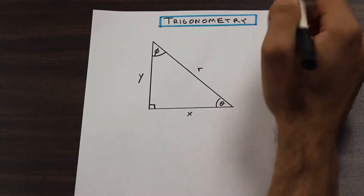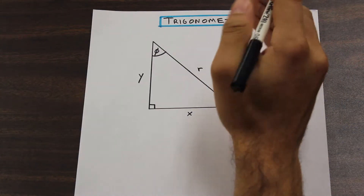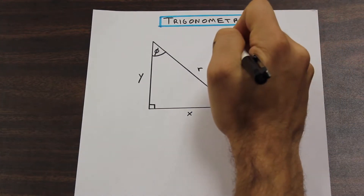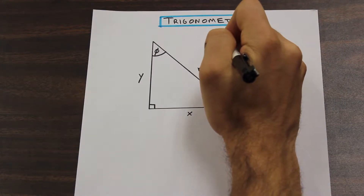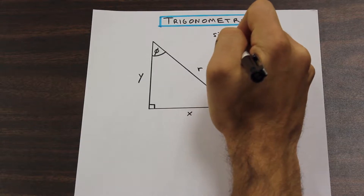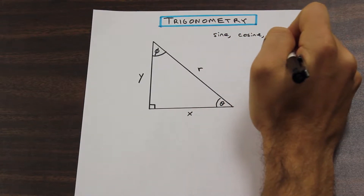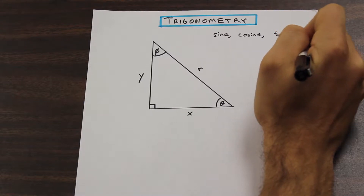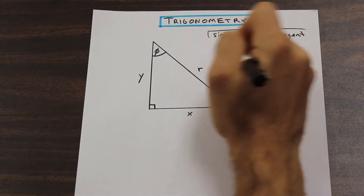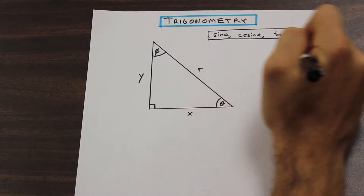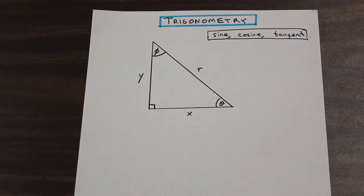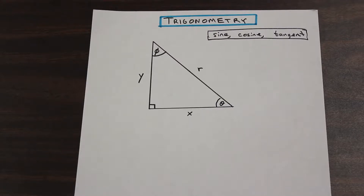Right off the bat, I'm going to let you know what the main three trig functions are. We have sine, we have cosine, and we have tangent. Those are our three main functions that we're going to be using. We also have cosecant, secant, and cotangent — we'll get to that later. That's a little bit more complicated and it's not the point of this video.